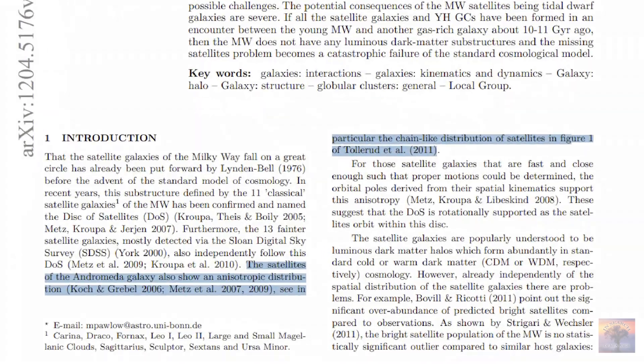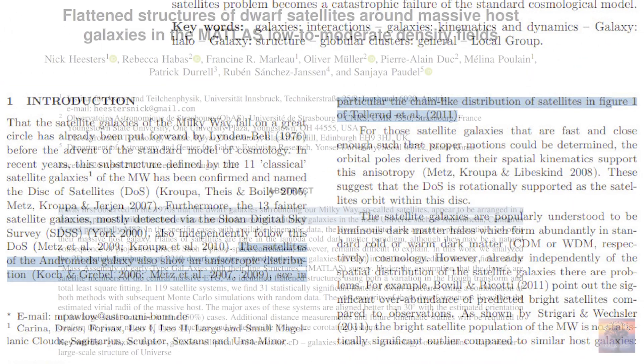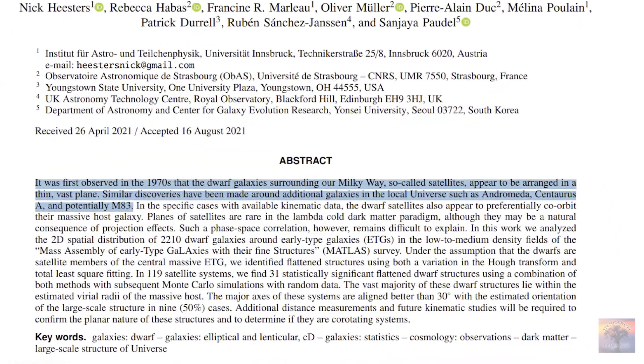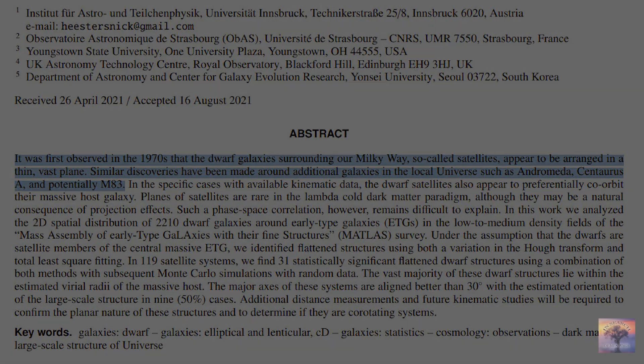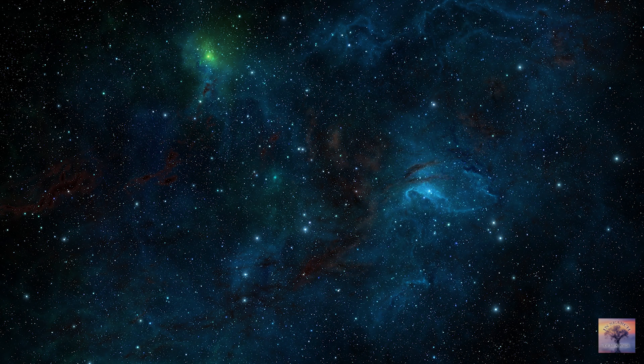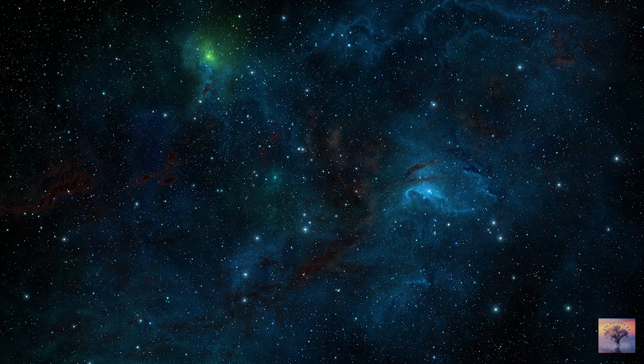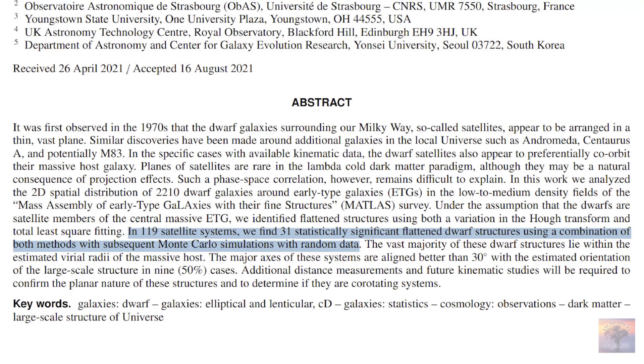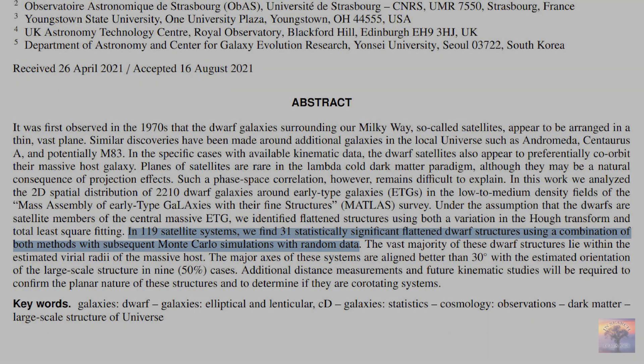But we see a similar polar distribution in the neighboring Andromeda galaxy, as well as in another neighboring galaxy, Centaurus A. How many other galaxies with a similar distribution of satellites are there that we cannot observe because the brightness of satellite galaxies is usually very low? And it turns out that even under such conditions, we can say that about a quarter of the brightest neighboring lenticular galaxies have a similar structure.